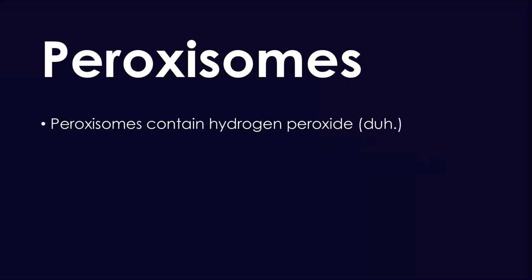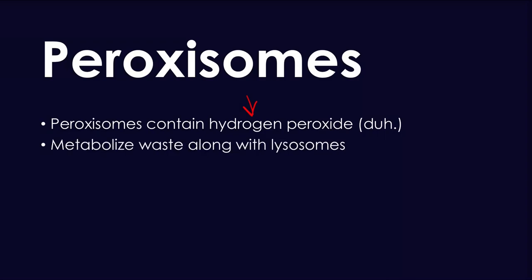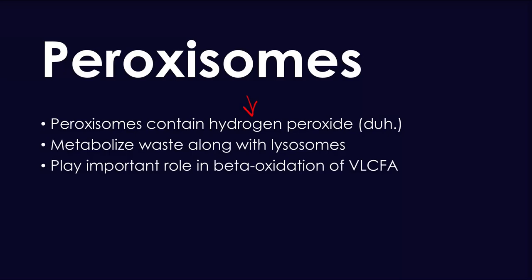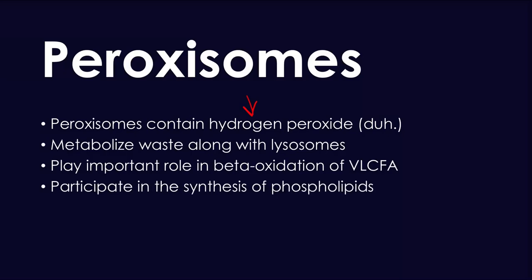Peroxisomes are very similar to lysosomes except that they contain hydrogen peroxide — very important for oxidative burst. They play a huge role in preventing certain bacteria from attacking our body. They also metabolize waste along with lysosomes. Peroxisomes play an important role in beta-oxidation of very long chain fatty acids, and they participate in the synthesis of phospholipids, playing a role in the production of the phospholipid bilayer.